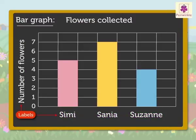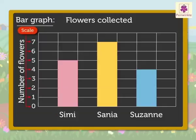The label tells us what kind of data is shown. Three, the scale tells us the number each block is equal to. Now let's see how we can read this bar graph.